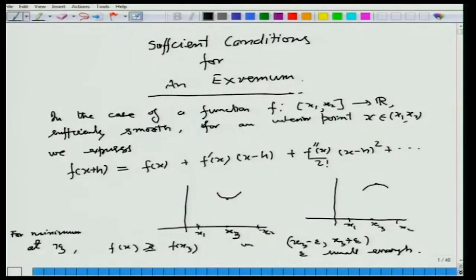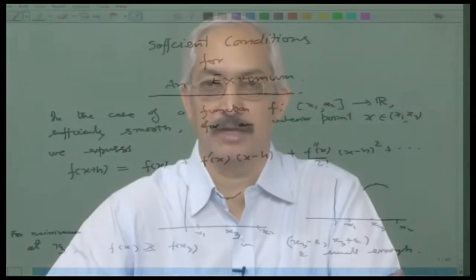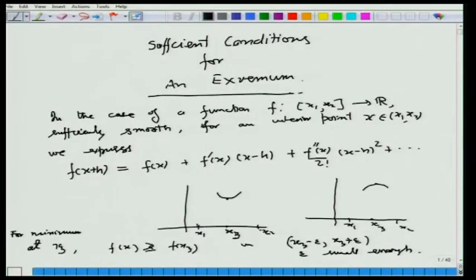We started in the last lecture with a brief introduction to the notion of minima and maxima of a function, where we consider the case where the function f is defined on the interval x₁ to x₂, and is sufficiently smooth so that whatever derivatives we are considering on f are continuous. We can expand f at any interior point x in the interval x₁ to x₂. Considering point x₃, we expand around x₃: f(x₃ + h) = f(x₃) + f'(x₃)·h + f''(x₃)/2!·h² and so on.